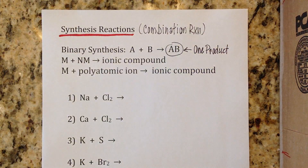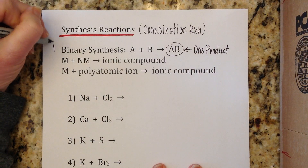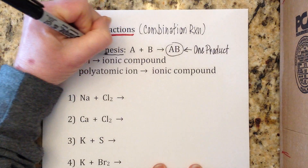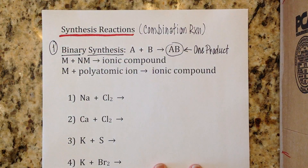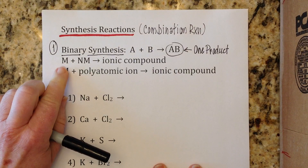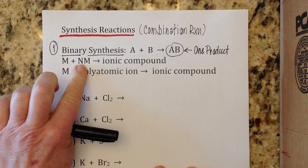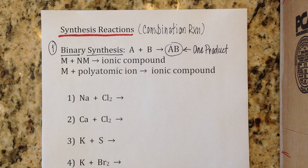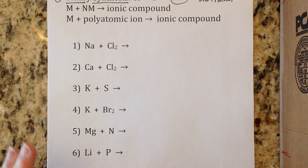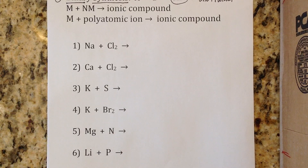One product is something that stands out as very specific to a synthesis reaction. We're going to look at two types of synthesis reactions today. The first type is called a binary synthesis reaction, where we put a metal with a non-metal and get an ionic compound — the metal and non-metal are our reactants, and the ionic compound or salt is our product. We'll look at the reactants and predict the product.